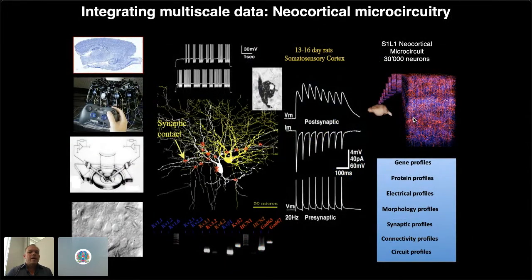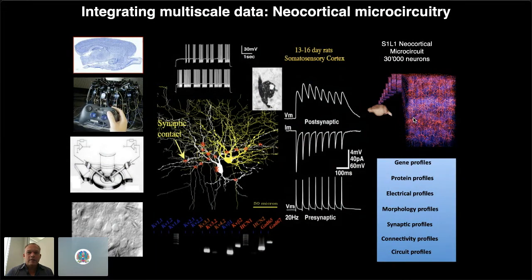The example I'll take you through first is from the Blue Brain Project, where I worked for about a decade. The challenge there was to integrate multiscale data on neocortical microcircuitry coming from rat somatosensory cortex — specifically a juvenile rat, postnatal day approximately 14, in the somatosensory area.